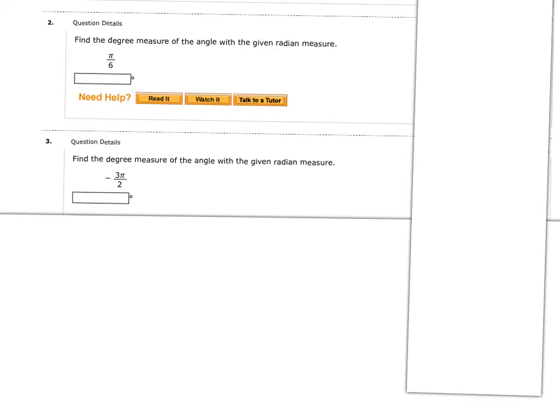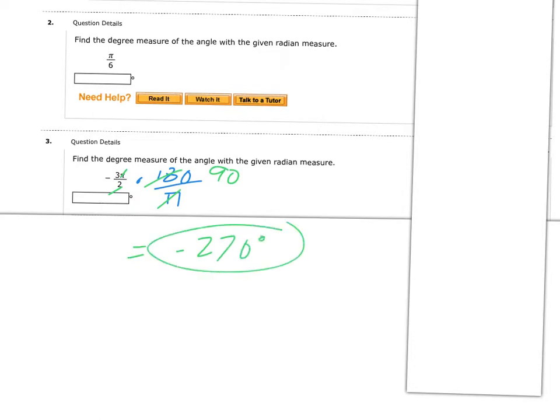Questions 2 and 3 are very similar, so I'm just going to do number 3. Once again, we multiply by 180 over pi. The pi's cancel and we partially cancel to get 90. So we're doing negative 3 times 90, which is negative 270 degrees. It's very important that we keep that negative — if the radian measurement was negative, the degree measurement will still be negative.